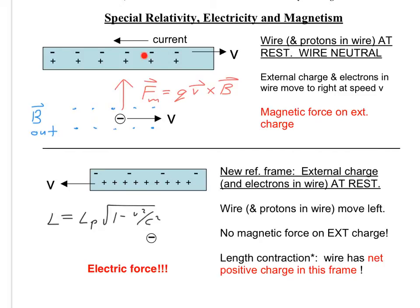You'll notice some other differences in the two figures, and they result from length contraction, which says that the length of an object in a frame of reference in which it is moving is less than in a frame of reference in which it is stationary. In the top figure, the wire is stationary, while in the bottom figure it's moving to the left, so therefore in the bottom figure the wire segment is shorter. Likewise, the distance between the protons is shorter in the bottom frame because they're moving to the left, whereas in the top frame the protons are stationary. Finally, in the bottom frame the electrons in the wire are stationary, but they're moving to the right in the top frame, so the electrons are closer together in the top figure than in the bottom figure where they're at rest.